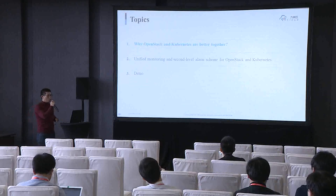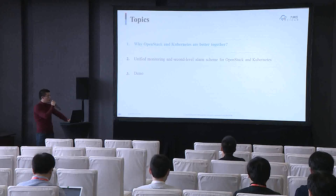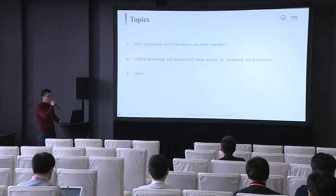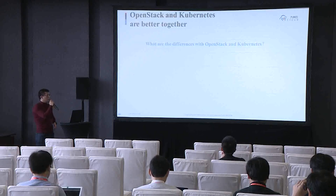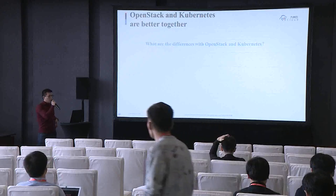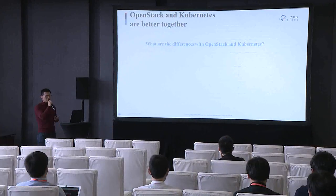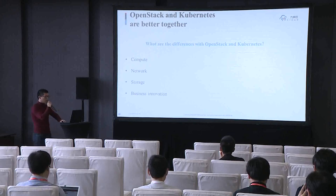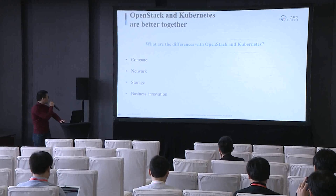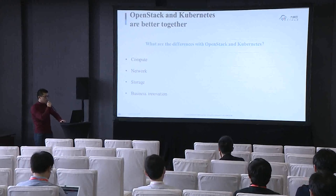Let me get back to the issue. We divide our topics into three parts. First, there is a question: why are OpenStack and Kubernetes better together? To answer this question better, we need to understand the difference between OpenStack and Kubernetes. Let's explain the problem from four aspects: compute, network, storage, and business innovation.